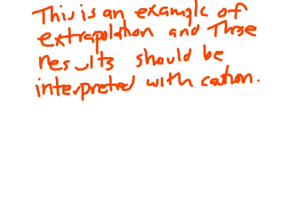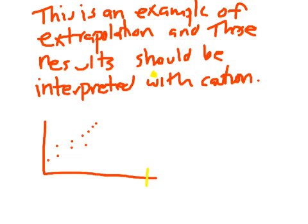A good example of extrapolation: if I gave you the height of a person between ages zero and ten and you made a graph, you might predict how tall they'd be at age 70 by continuing the line. But height levels off — so predicting their height much later in life is extrapolation. The melon example was a mild case of extrapolation, not too far outside the data range, whereas predicting someone's height at 70 would clearly be extrapolation.